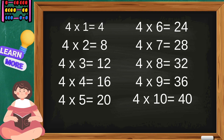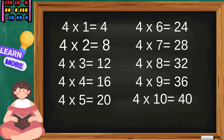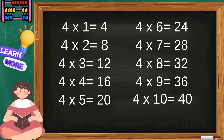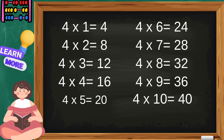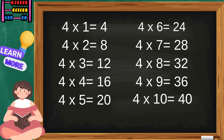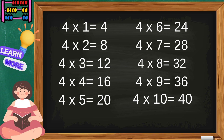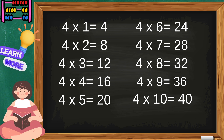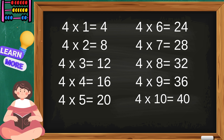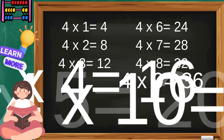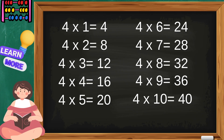Four ones are four, four twos are eight, four threes are twelve, four fours are sixteen, four fives are twenty, four sixes are twenty-four, four sevens are twenty-eight, four eights are thirty-two, four nines are thirty-six, four tens are forty. That was the table of four.